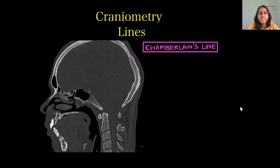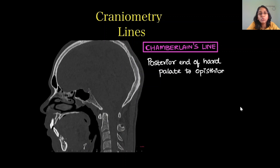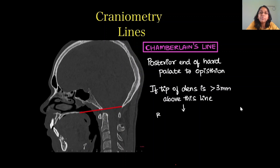Coming to the lines — first we have Chamberlain's line, which joins from the posterior end of the hard palate to the opisthion. If the tip of the dens is 3 mm above this line, it indicates basilar invagination.